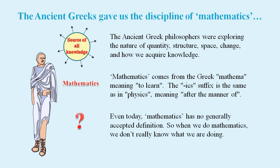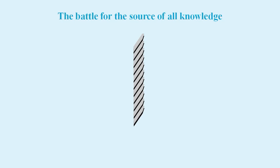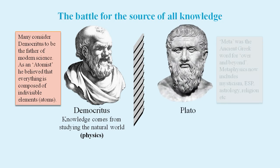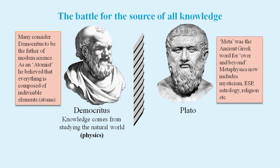In the ancient Greek battle to find the source of all knowledge, on one side was one of the founders of atomism, Democritus. He believed that knowledge comes from the study of physical things. On the other side, we have the founder of Platonism, Plato himself. He believed that knowledge comes from the study of metaphysical things, which are things that don't exist in the physical world.